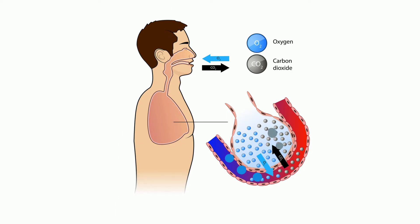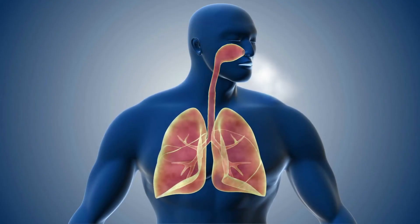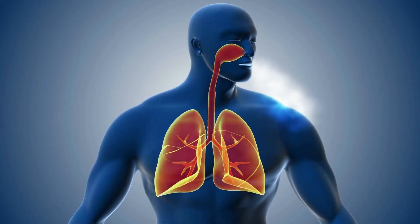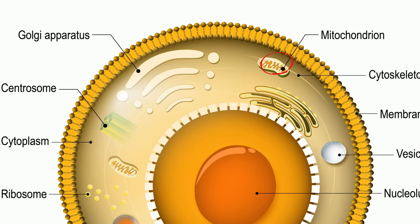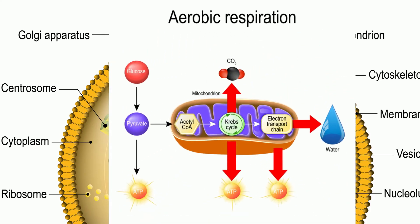From the alveoli, the carbon dioxide travels up the trachea and out the mouth and nostrils. The oxygen is used in the body at the mitochondria to help produce energy in the form of ATP.